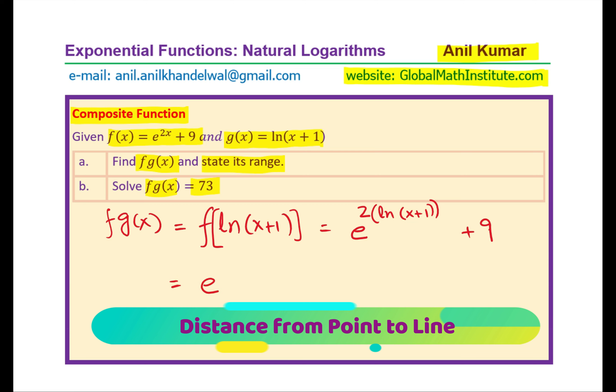Now e and ln are inverse functions, right? So we may simplify this and write as e to the power of ln(x + 1) whole square plus 9. Now ln and e are inverse functions, we can write this as (x + 1) whole square plus 9. So that gives you the f of g of x. So that is one part of part a.